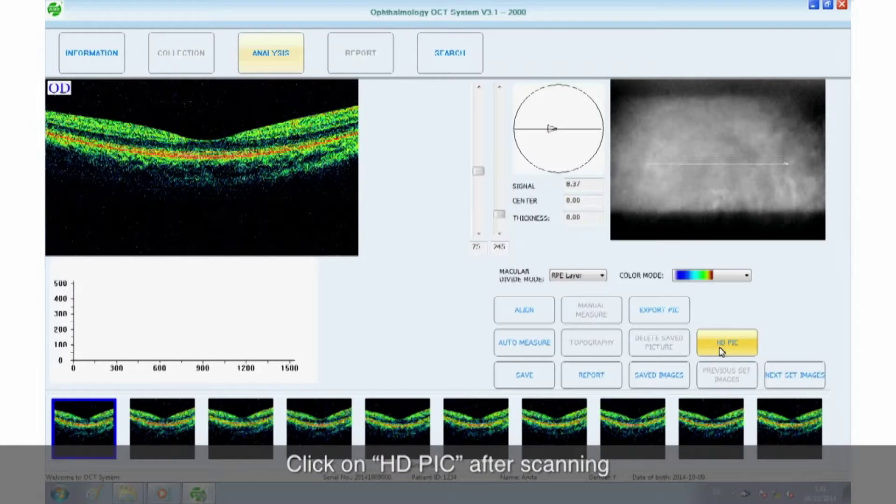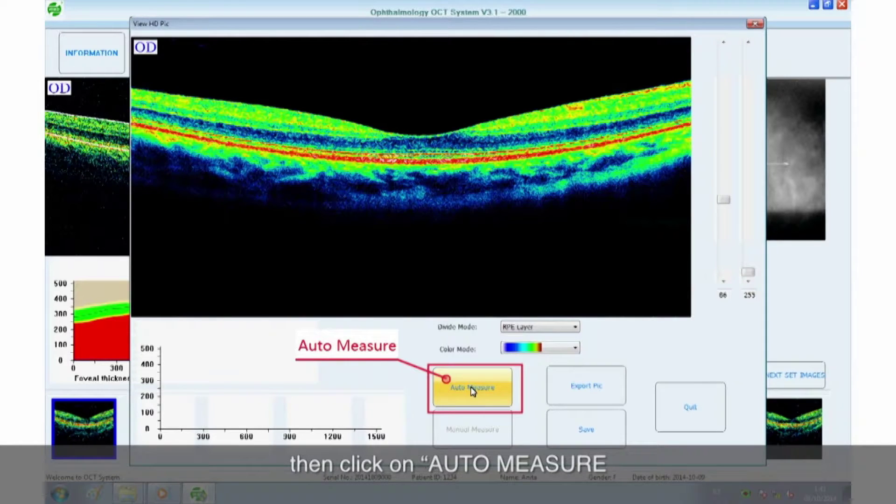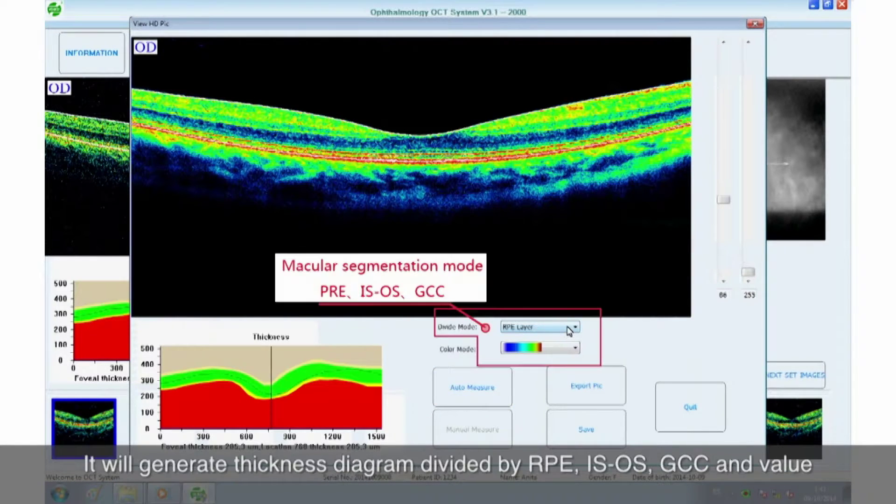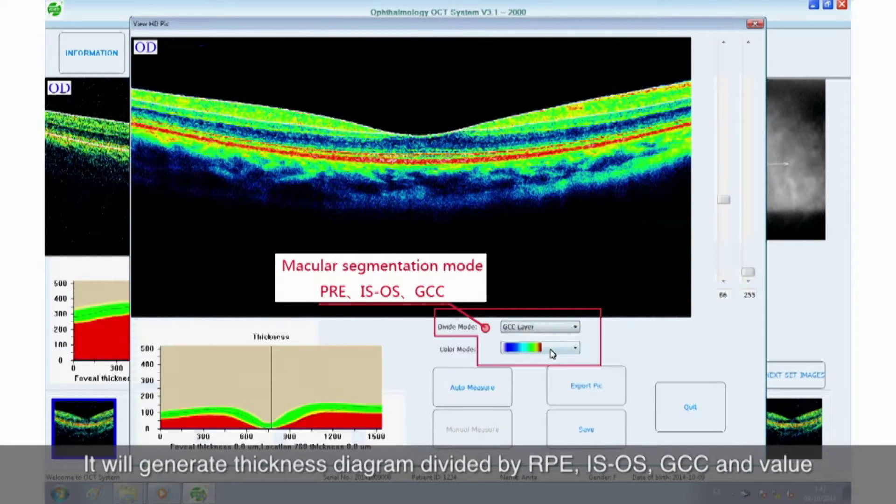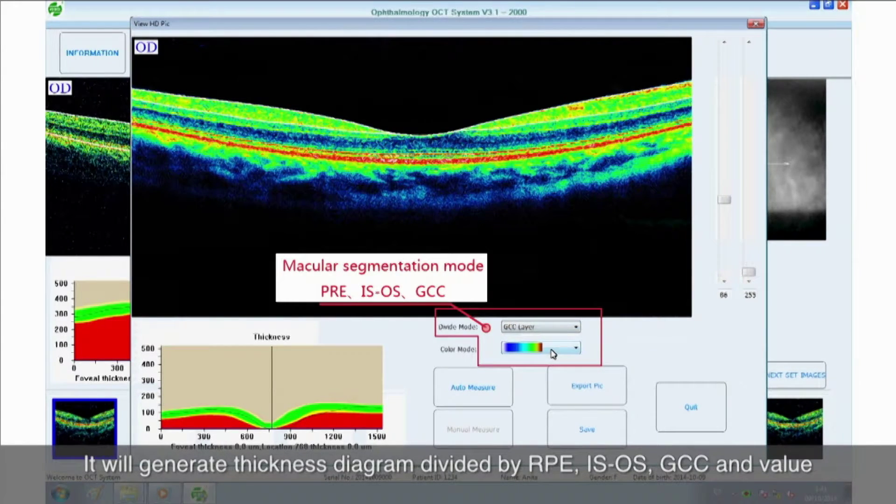Click on HD pick after scanning. Then click on Auto-measure. It will generate thickness diagram divided by RPE, ISOS, GCC, and value.